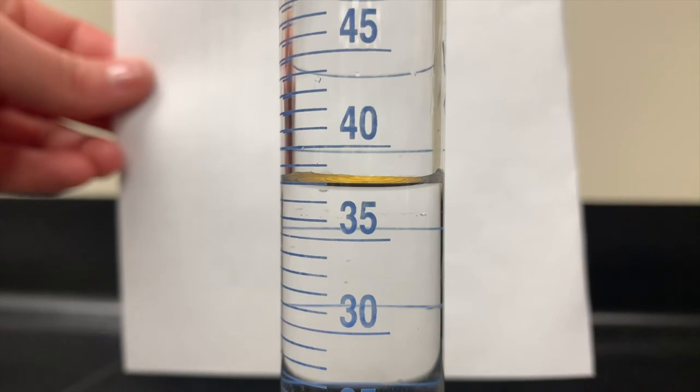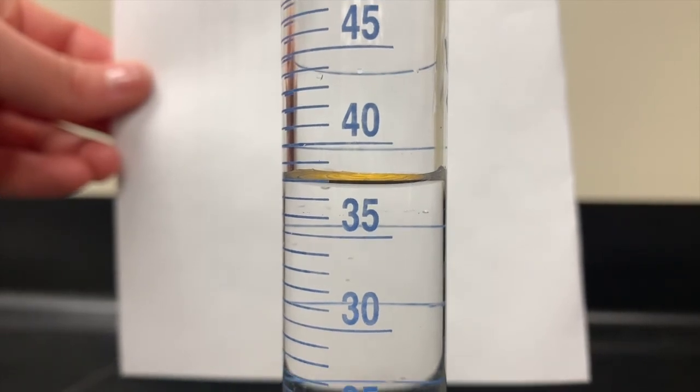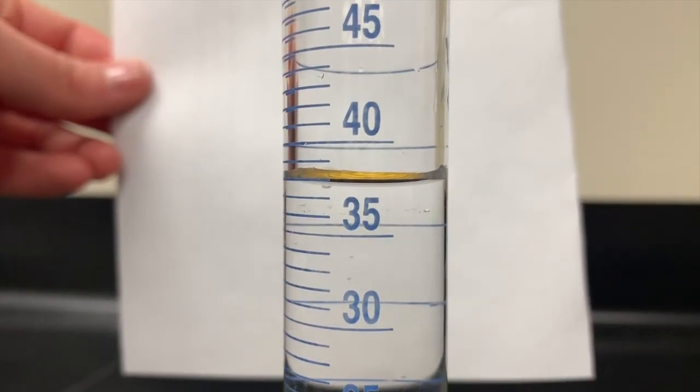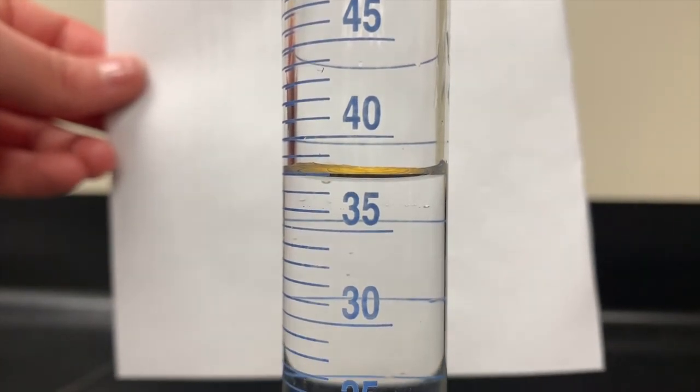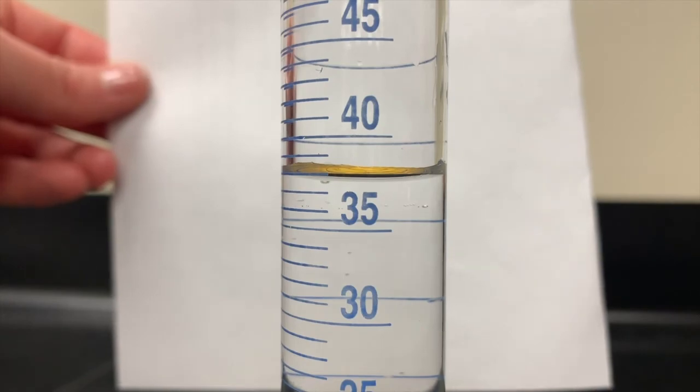When transferring a liquid into another container, some liquid is left behind in the original container. Therefore, do as few liquid transfers as possible once the liquid is measured, so you don't lose any of your recorded volume.